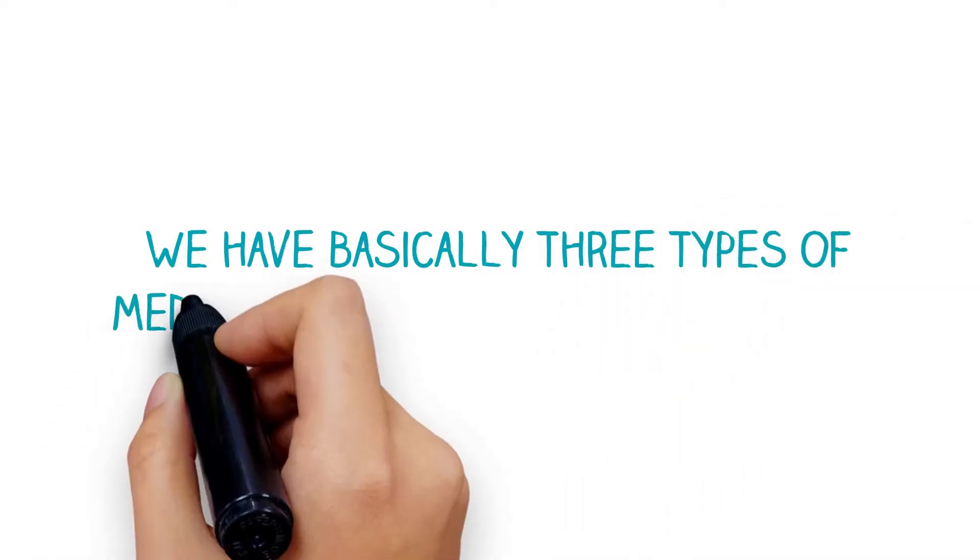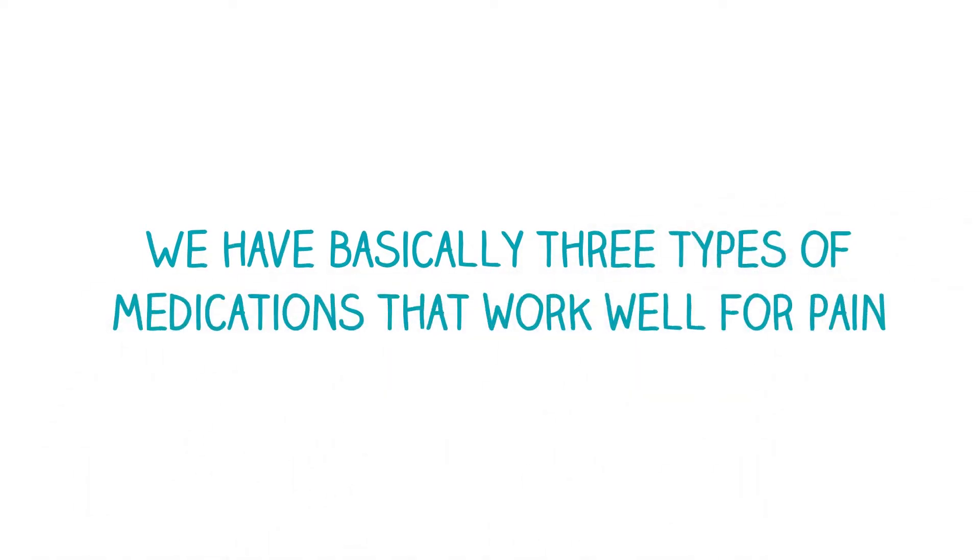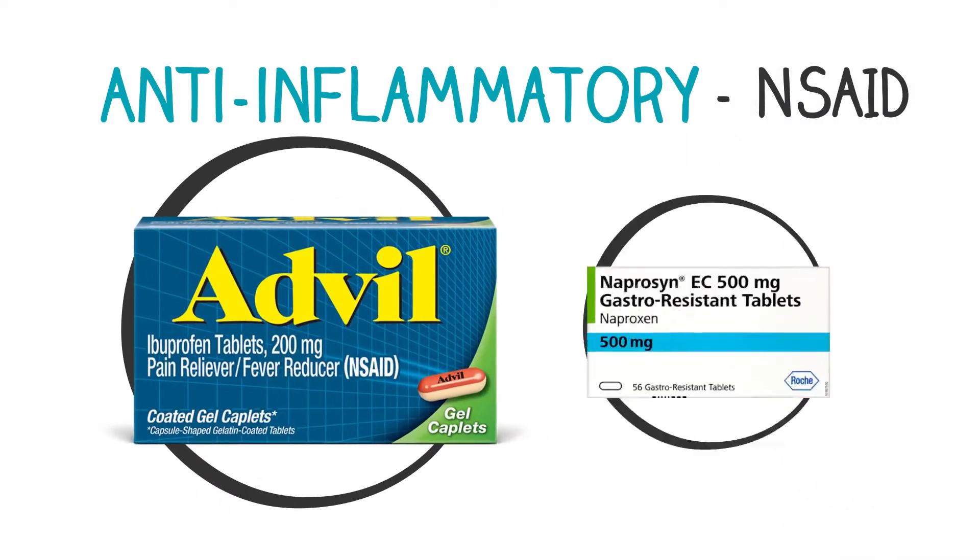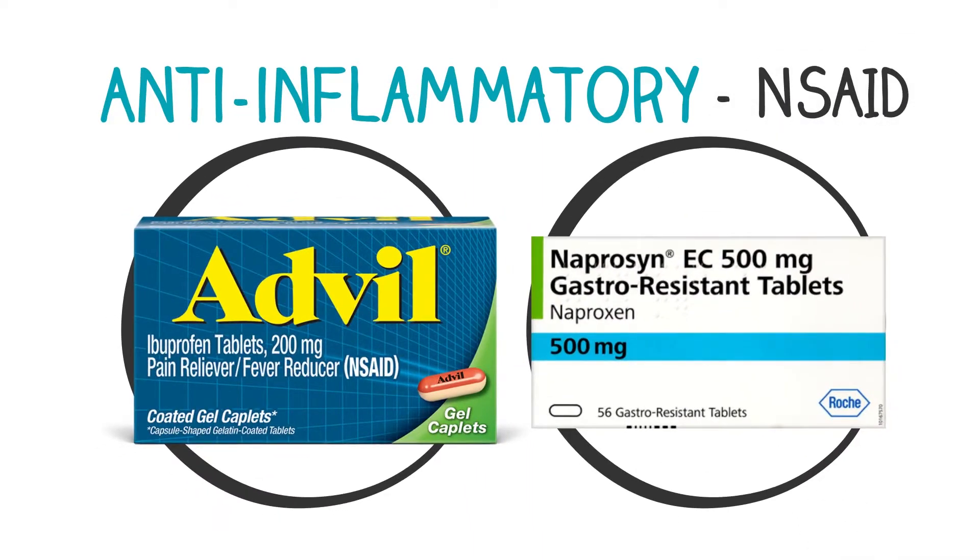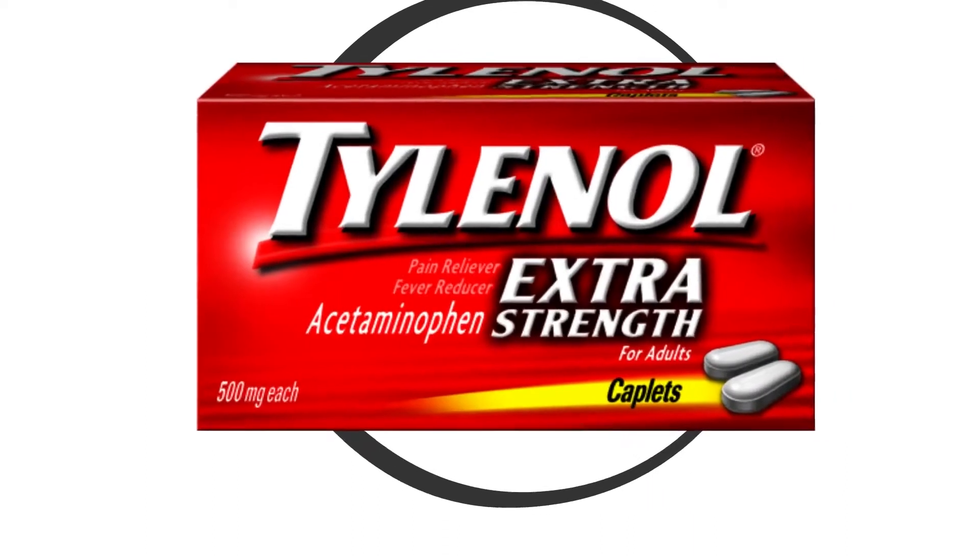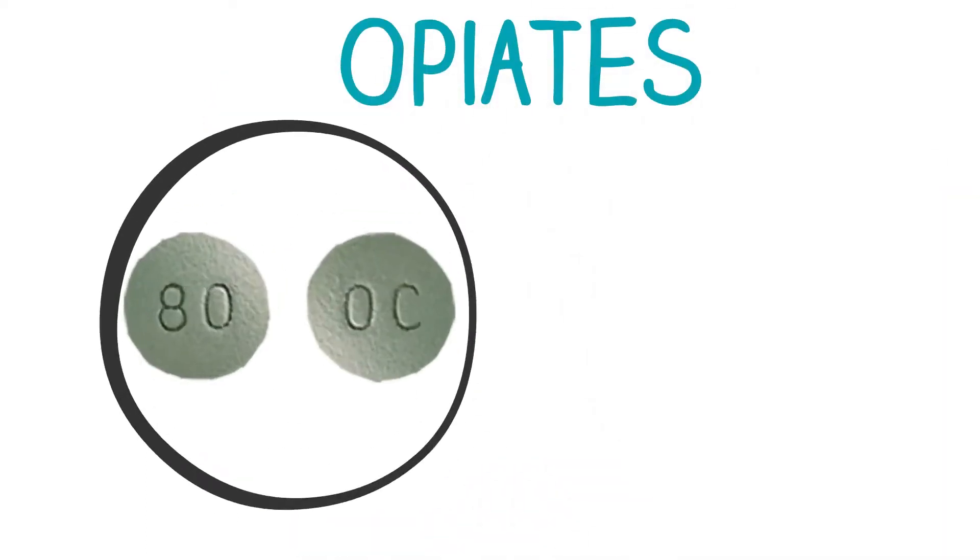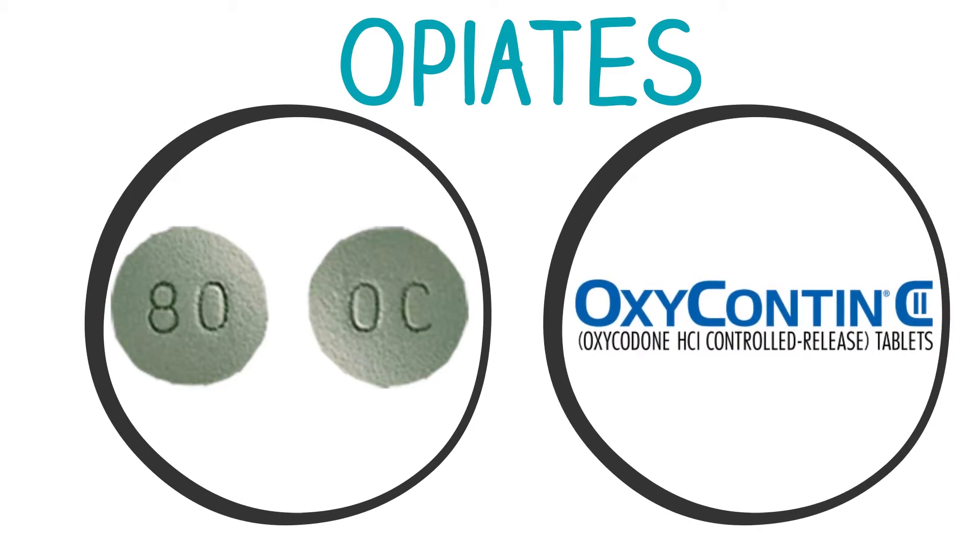We have basically three types of medications that work well for pain: anti-inflammatory medications, called NSAIDs, like ibuprofen and naproxen; Tylenol, which is also called acetaminophen; and opiates, such as oxycodone and oxycontin.